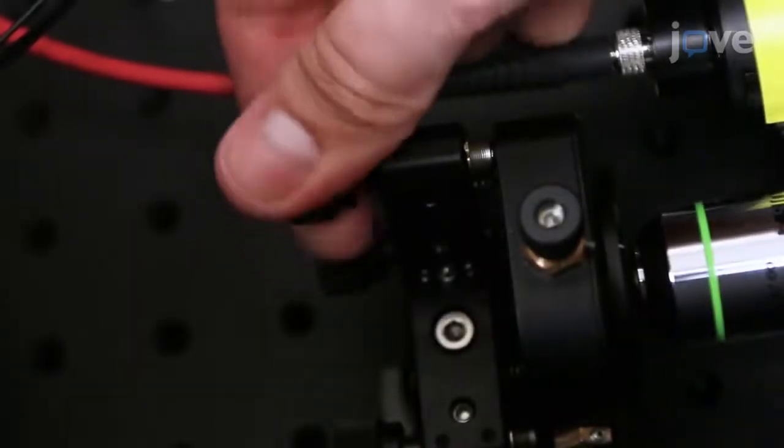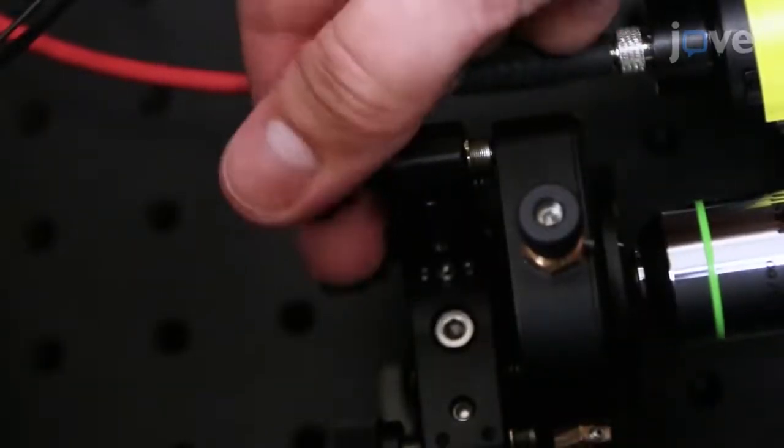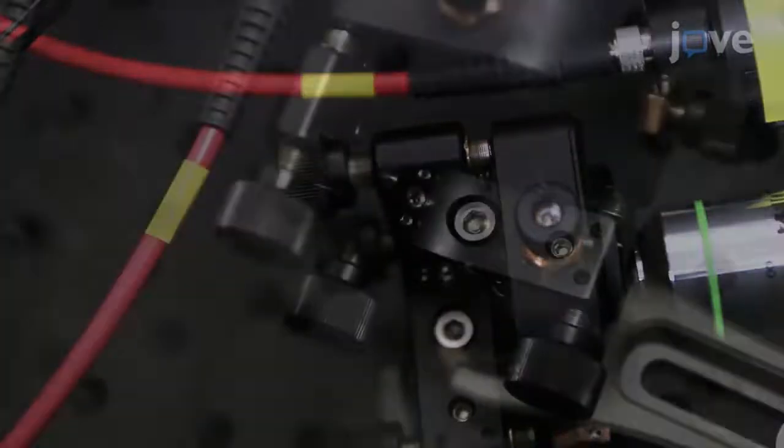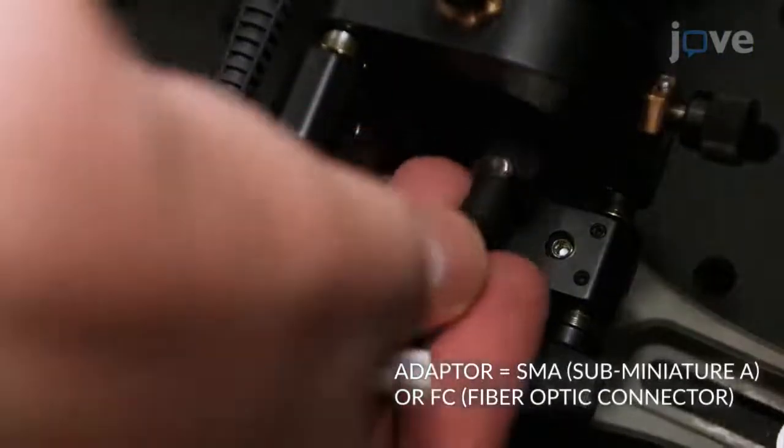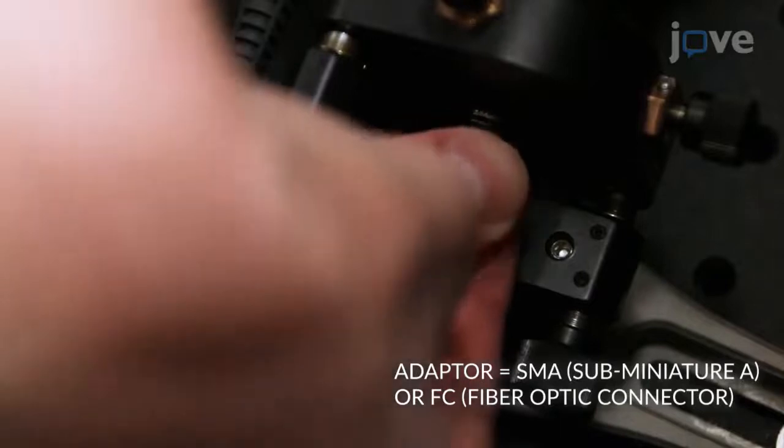Begin by loosening all screws on the 5-axis translator. Screw in the patch cord to the adapter that is affixed to the 5-axis translator.